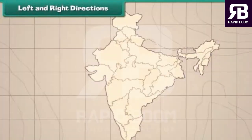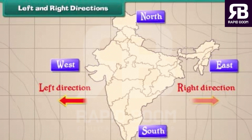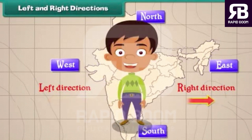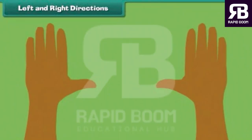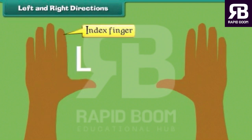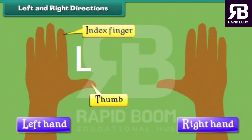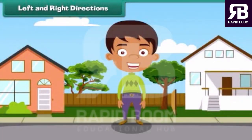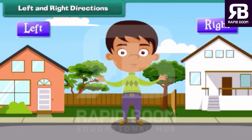Left and right directions. In addition to north, south, west and east, we also use left and right directions to locate a place. We use our hands to indicate the left and right directions. The hand that makes the letter L when the index finger and thumb are stretched out is our left hand, and the other one is our right hand. The places towards our right hand are said to be on the right and those towards our left hand are said to be on the left.